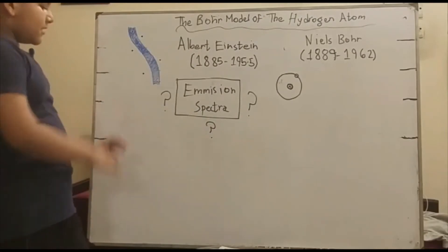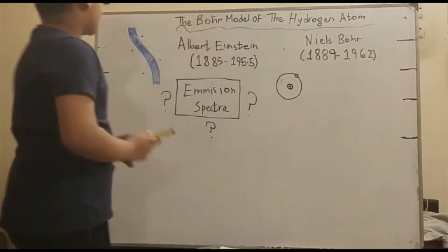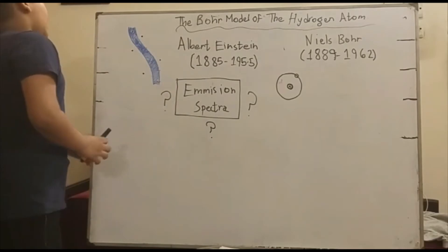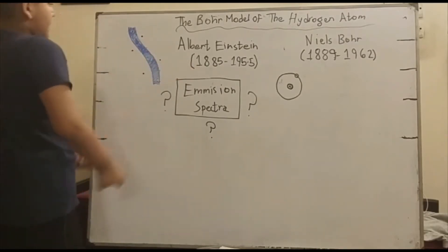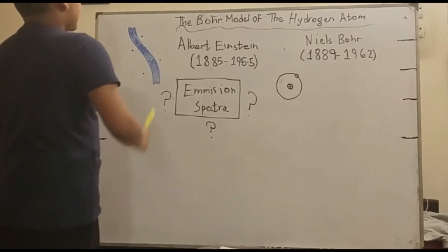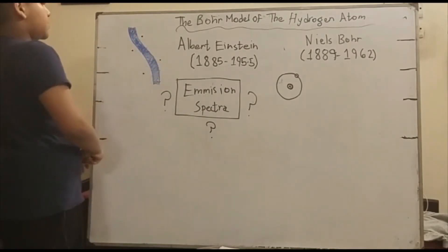Assalamu alaikum everyone, and today we are going to talk about the Bohr model of the hydrogen atom. In my last chemistry video we saw Einstein extended Planck's concept that energy can be quantized. Albert Einstein extended this method and said that light also has quanta which he called photons, which are particles of light.